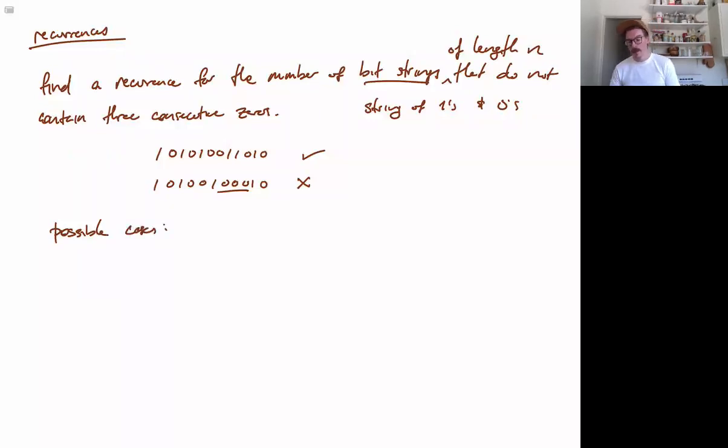So there's a few possible cases that we'll end up having to consider. One of the following things must happen. It must either end in one. Or it ends in a zero. And that we can split up into cases as well, based on the digit that comes before it. Either it ends in one zero. Or if both these last two digits are zero, then this is where our condition comes in, that it does not contain three consecutive zeros. If the last two digits are a zero, this must be a one.